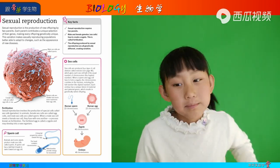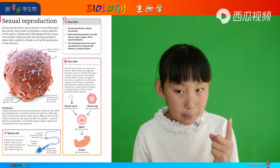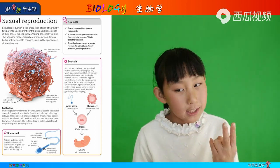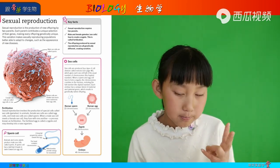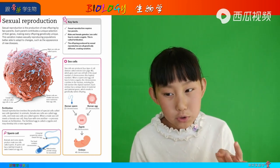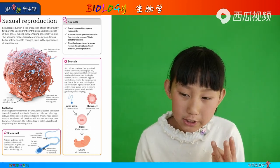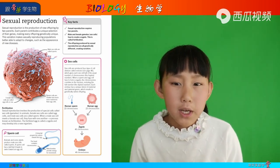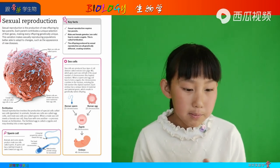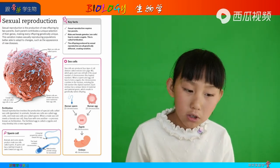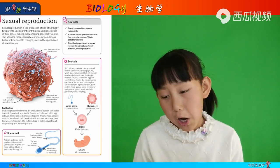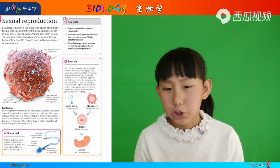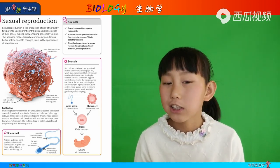Key facts. Sexual reproduction requires two parents. Male and female gametes fuse to create a zygote — this is called fertilization. The offspring produced by sexual reproduction are all genetically different, creating variation. Male sex cells are called sperm; female sex cells are called eggs, or egg cells, also known as ova. Sperm cells are much smaller but much more numerous than egg cells.